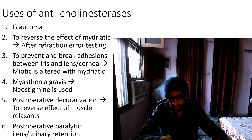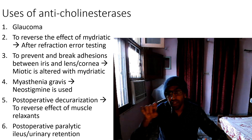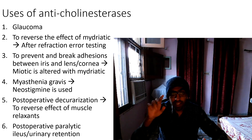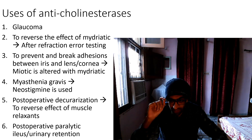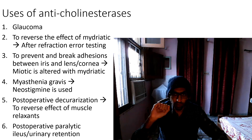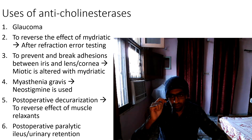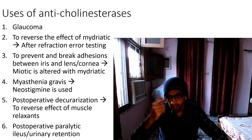Pilocarpine is also used to reverse the effect of mydriatics. Mydriatics cause dilatation of the pupil. After refraction error testing, we use a miotic like pilocarpine to cause constriction of the pupil back to normal.